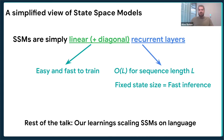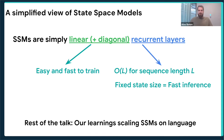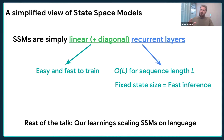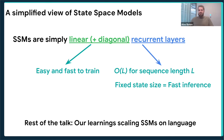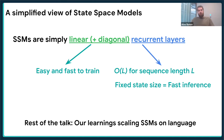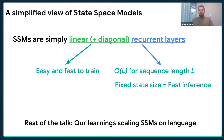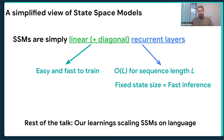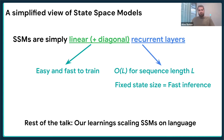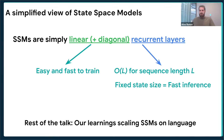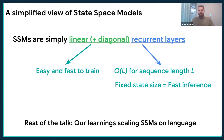Modern SSMs are essentially just linear diagonal recurrent layers. This is the easiest way to think about them. Because they are both linear and diagonal, that makes them easy and fast to train — they still have a sequential nature but you can parallelize it. And because they are diagonal, you have far fewer FLOPs, so even if you compute sequentially it's very fast. Their computation scales linearly with sequence length, and they compress the sequence to a fixed state size, which makes them much faster during inference.